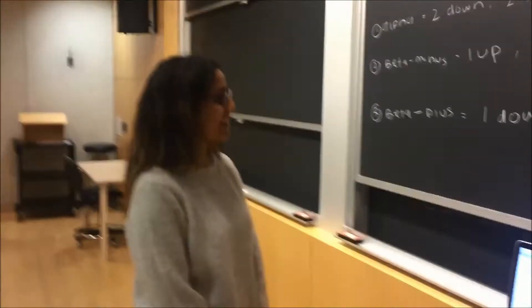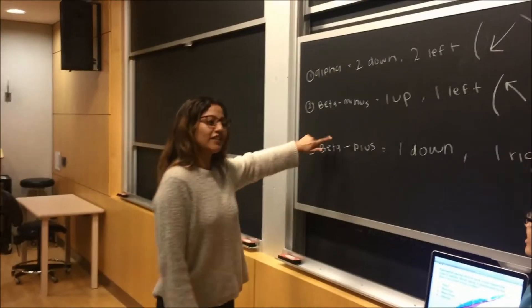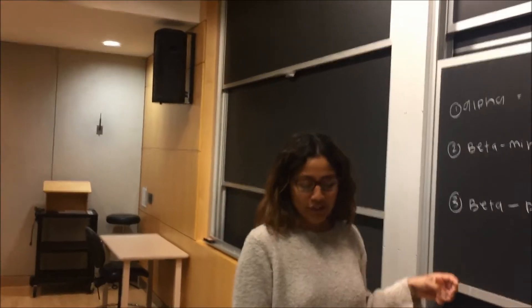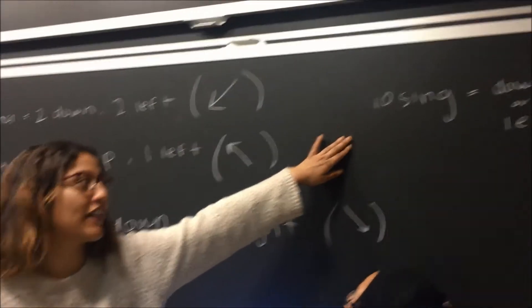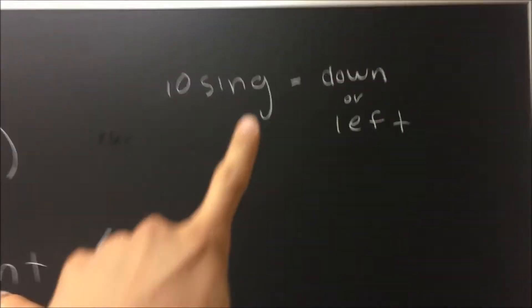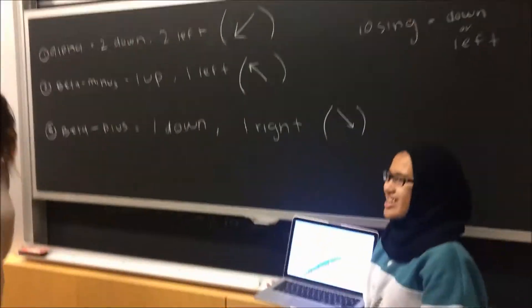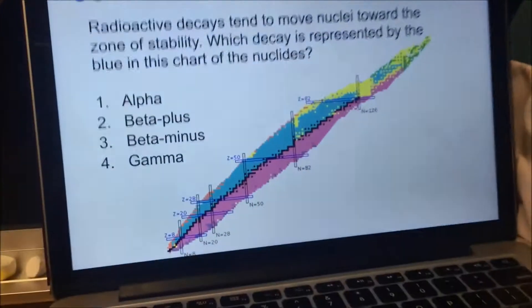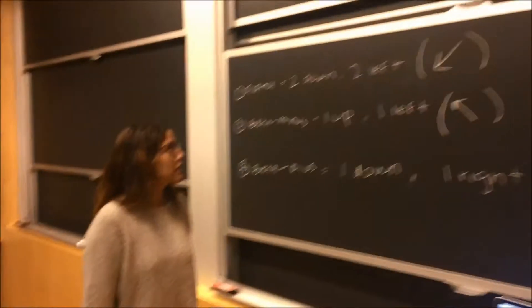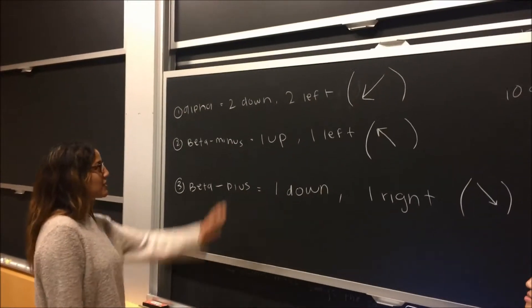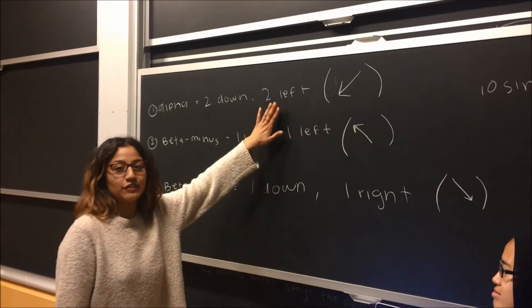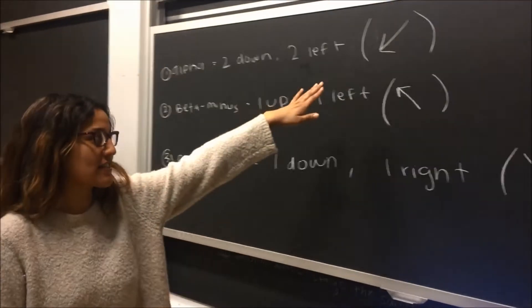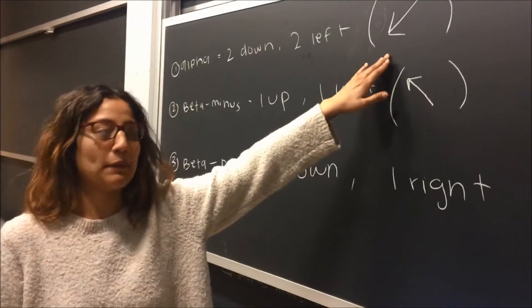Assuming they hit pause — so I'll do alpha and then you can do the other two. For alpha decay, we're losing 2 protons and 2 neutrons. If you're losing anything, you go down or left on this chart. Because you're losing 2 protons, you go down 2; and because you're losing 2 neutrons, you go left 2. That's the general diagonal movement it would be making.